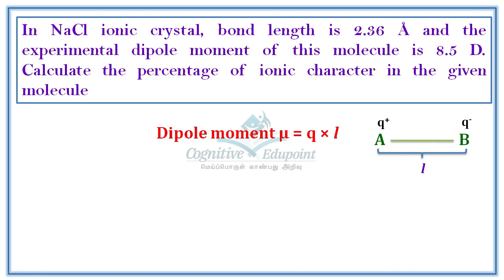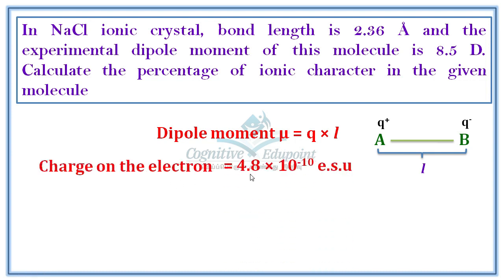When there is a complete electron transfer, the compound is fully ionic. Most compounds have both covalent and ionic character. Dipole moment is charge multiplied by distance. For ionic compounds like NaCl, one electron is transferred. The charge in CGS units is 4.8 × 10⁻¹⁰ electrostatic units (ESU).